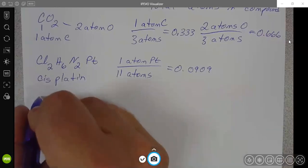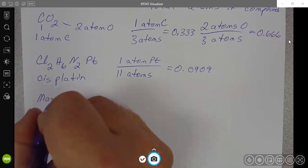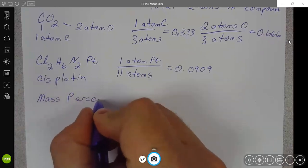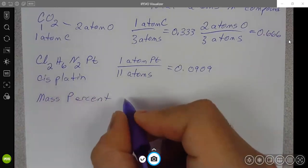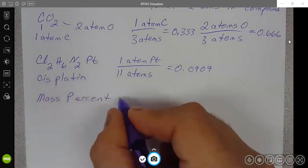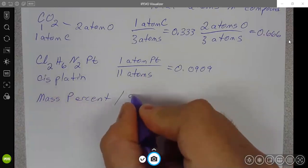So percent composition or mass percent. This is the main way we're going to think about determining the composition of a compound if we know what's in it. So percent composition.